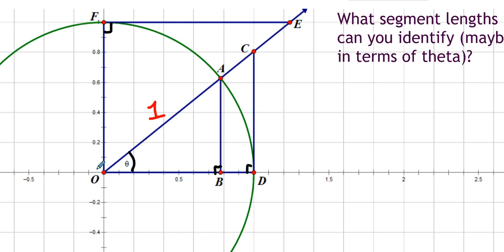OA is one, right? From O to A, that's a radius of the unit circle, so that's one. Similarly, OD is also one.